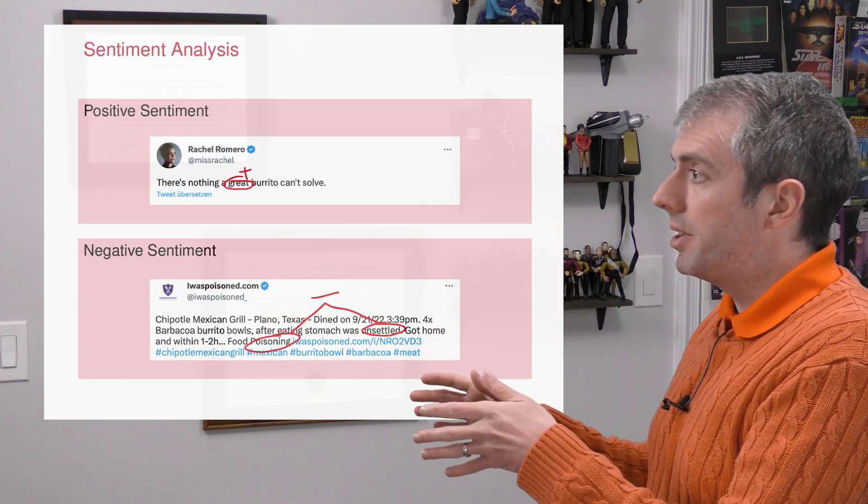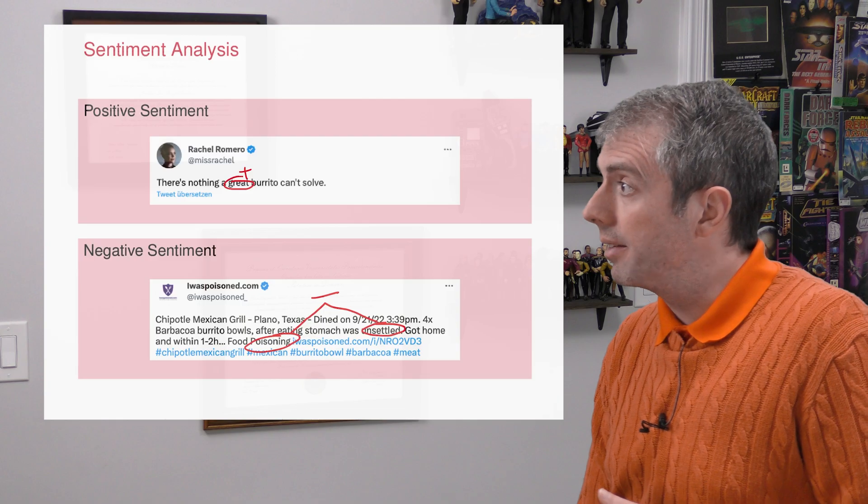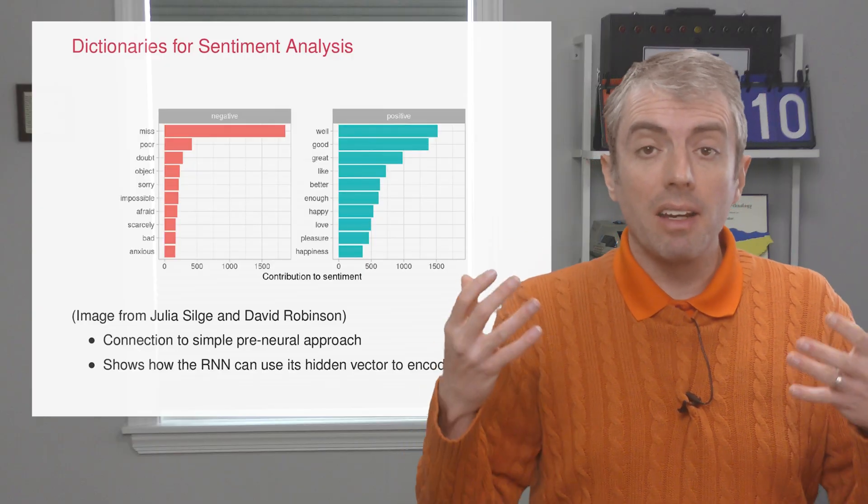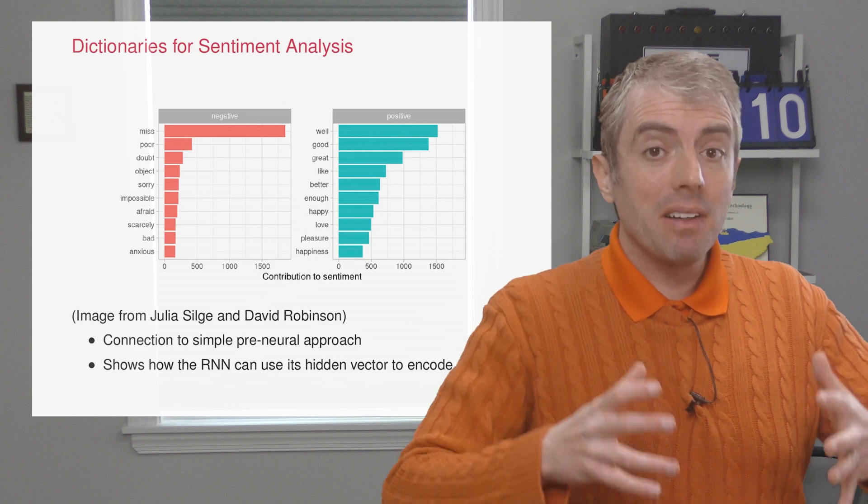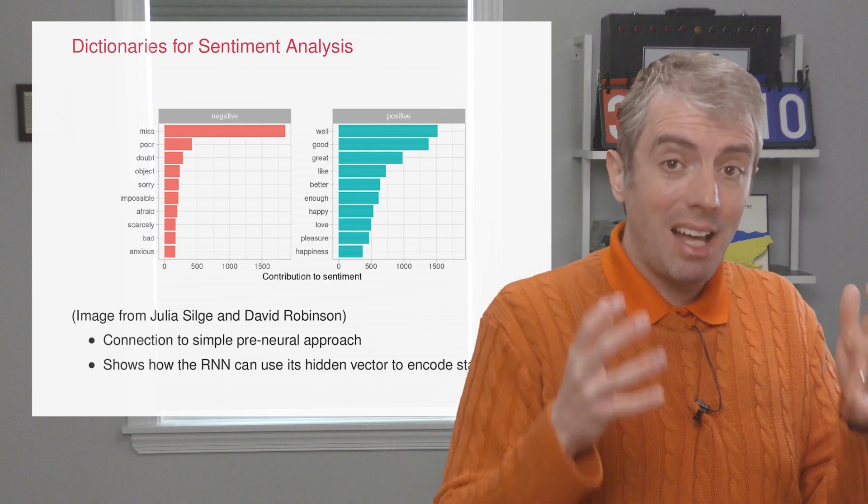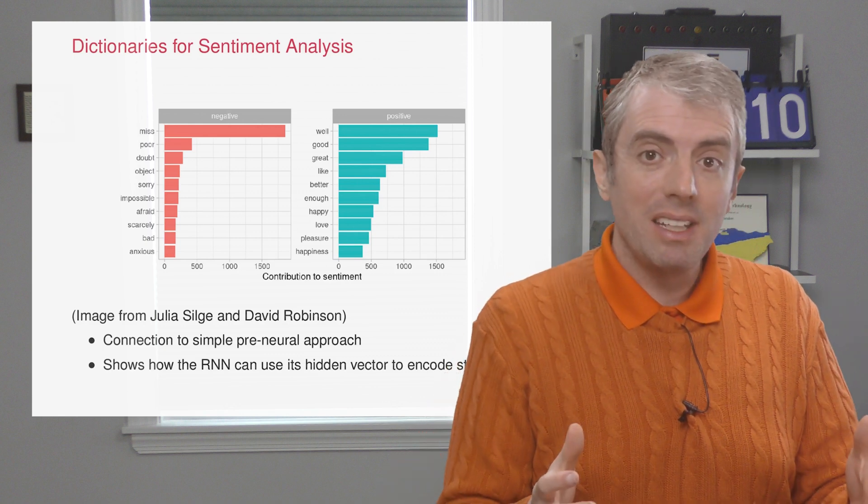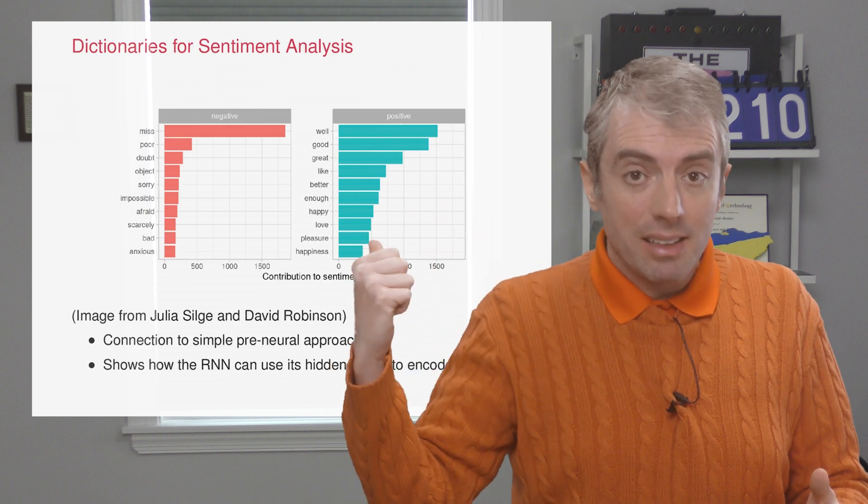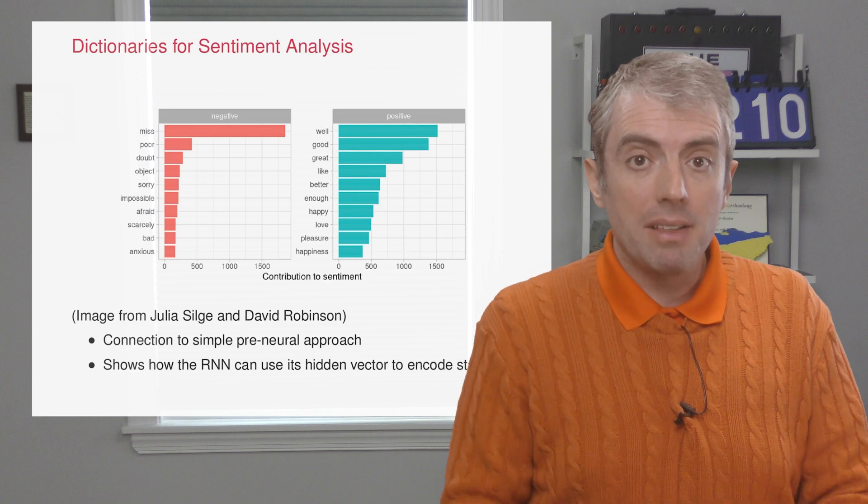A very simple algorithm to do that is to have dictionaries of positive and negative words. Add up the positive words and subtract the negative words to get a score. This is a really naive method, but there are a number of companies that made a lot of money in the 90s and early 2000s that did basically just this, counting up positive, negative words, giving a score for every piece of text.